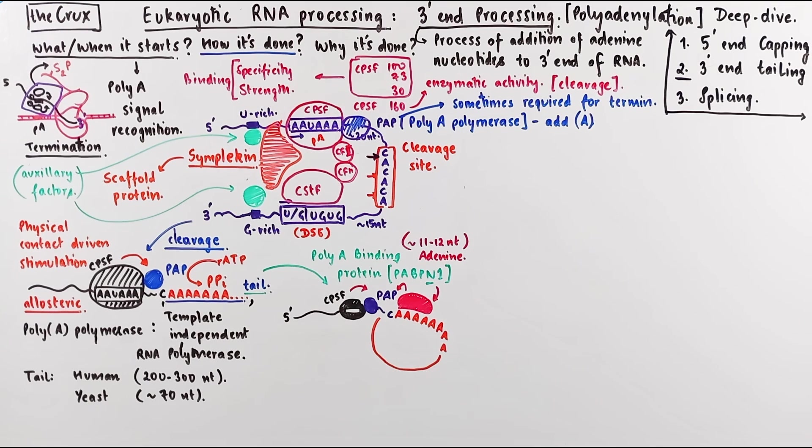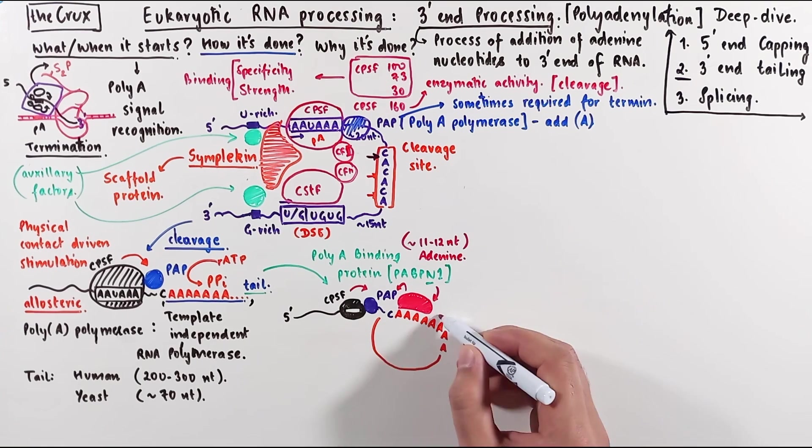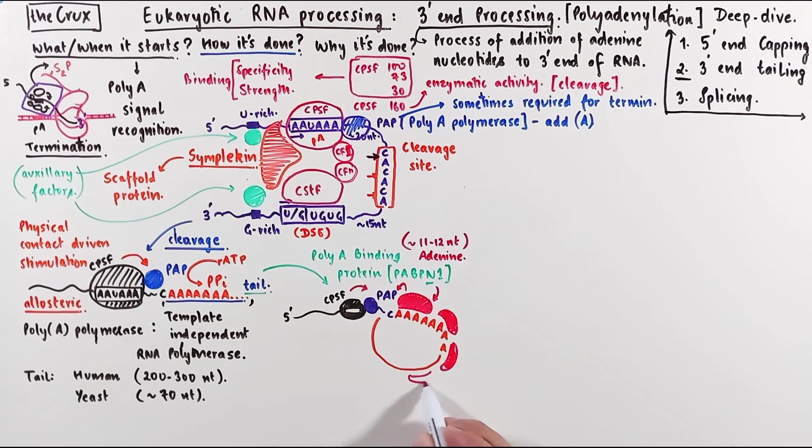When this happens, the PAP enzyme keeps adding adenines, and the polyA binding protein starts decorating the polyA tail. And this tail grows to be about somewhere between 200 to 300 nucleotides. All these polyA binding proteins provide additional activation to the moving polymerase. The growth of this polyA tail is such that it takes on this circular looping conformation.